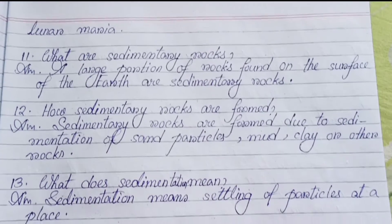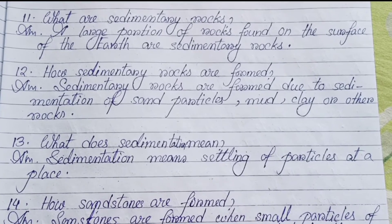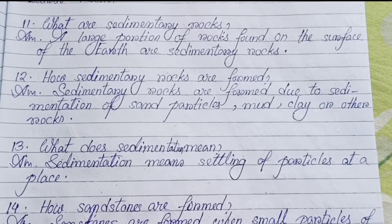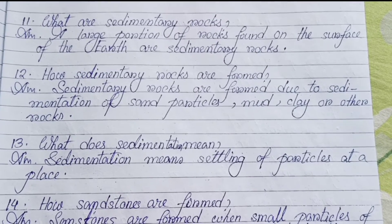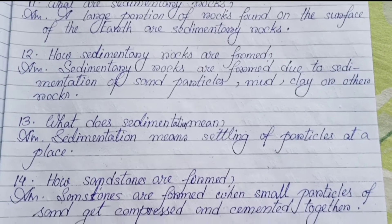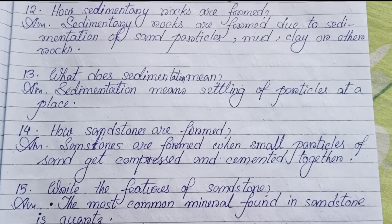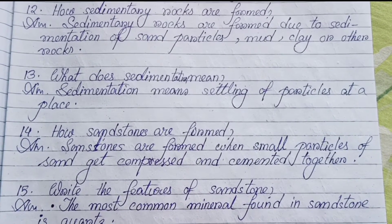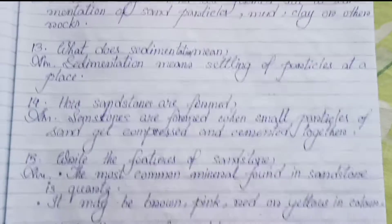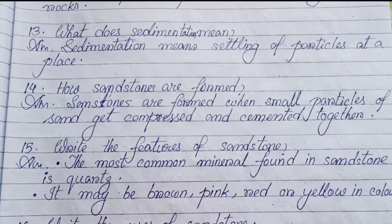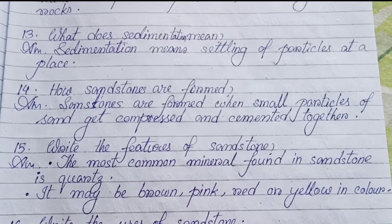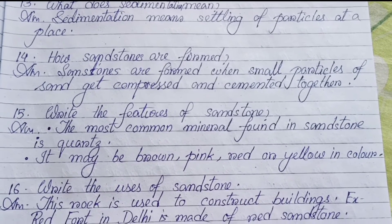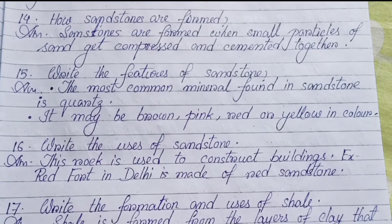Number eleven: What are sedimentary rocks? A large portion of rocks found on the surface of the earth are sedimentary rocks. Number twelve: How are sedimentary rocks formed? Sedimentary rocks are formed due to sedimentation of sand particles, silt, clay, or other rocks. Number thirteen: What does sedimentation mean? Sedimentation means the settling of particles at a place.